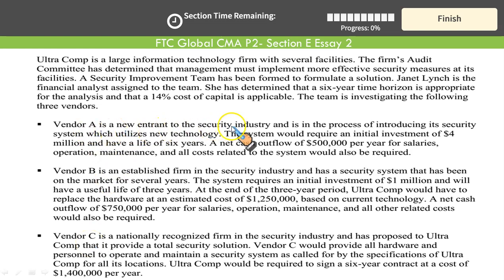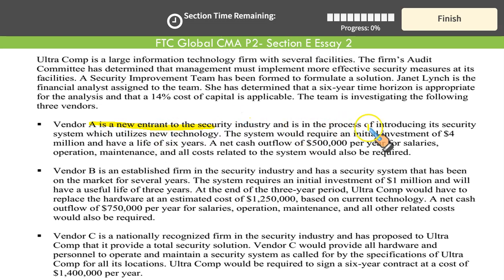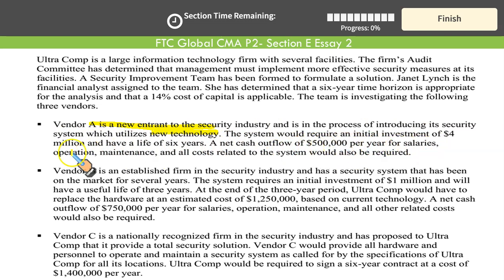Vendor A is a new entrant in the security industry — and this is a risk. A new entrant doesn't know the tricks of the trade, so this is a little risky. Vendor A is in the process of introducing its security system which utilizes new technology — untested, unproven technology that can put your business in danger. The system would require an initial investment of $4 million and have a life of 6 years. A net cash outflow of $500,000 per year for salaries, operations, maintenance, and all related costs would also be required.